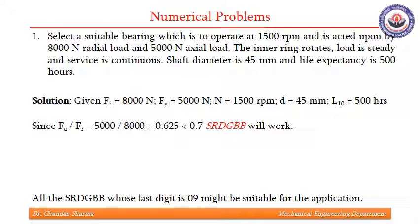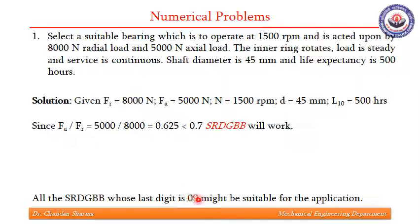In the very first numerical, we are supposed to select a bearing which is to operate at 1500 rpm and is acted upon by an 8000 newton radial load and 5000 newton axial load. The shaft diameter is 45 mm, meaning all bearings whose last two digits are 09 might be suitable for the application. We have to see which bearing among the available ones shall suit our application, using the procedure studied in the previous presentations.